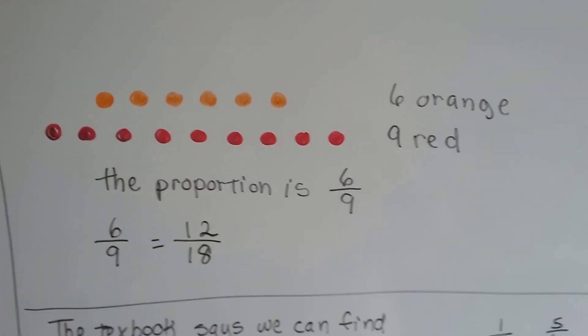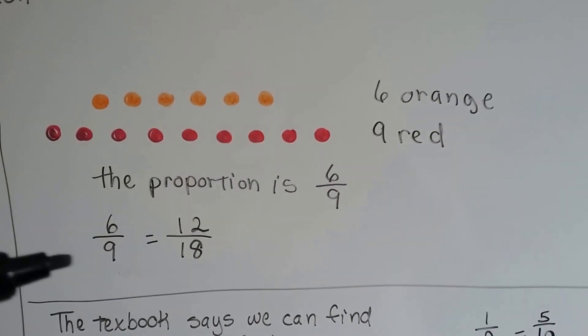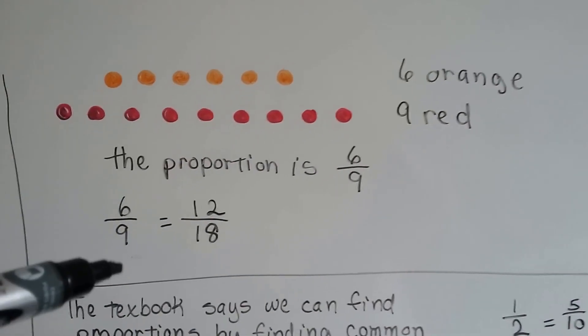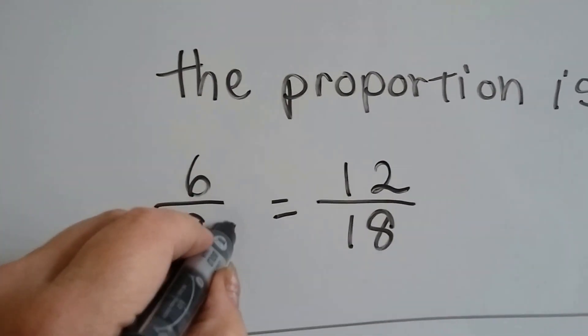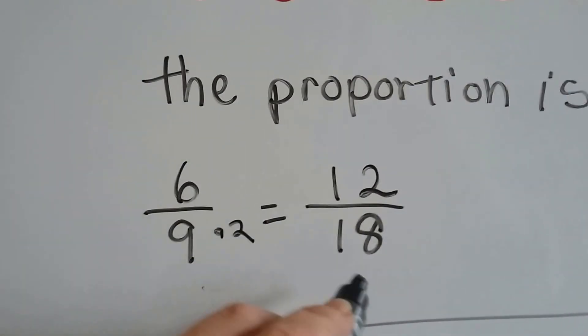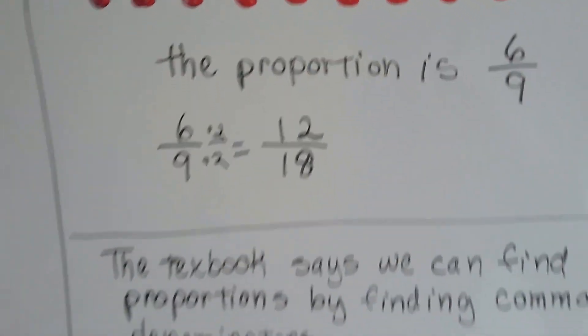When we have six orange dots and nine red dots, the proportion is six to nine, six over nine. We know that they're in proportion to each other because we can multiply them by a form of one. Nine times two is eighteen, and six times two is twelve, see? So we know they're in proportion.